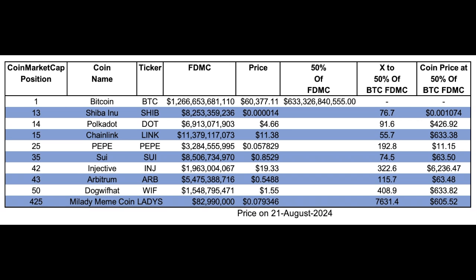The last coin I included — and you can do this with any asset, since once the formula is set up it's endless — is at position 425, much further down the list, obviously riskier and smaller. Its fully diluted market cap is just $83 million, while the others are in the billions. This would potentially be 7,631x if it reached 50% of Bitcoin's fully diluted market cap. In my opinion that's not going to happen, but it gives you a scale of what's possible when investing in smaller assets.